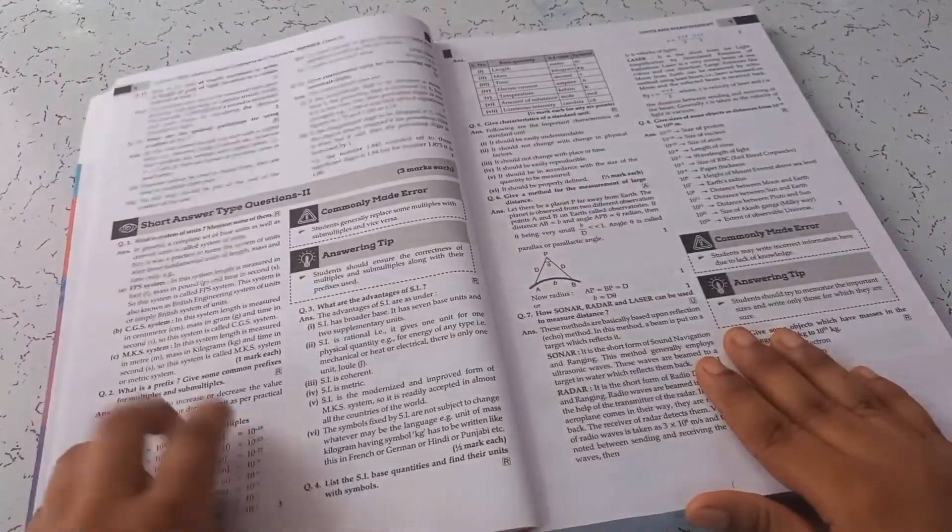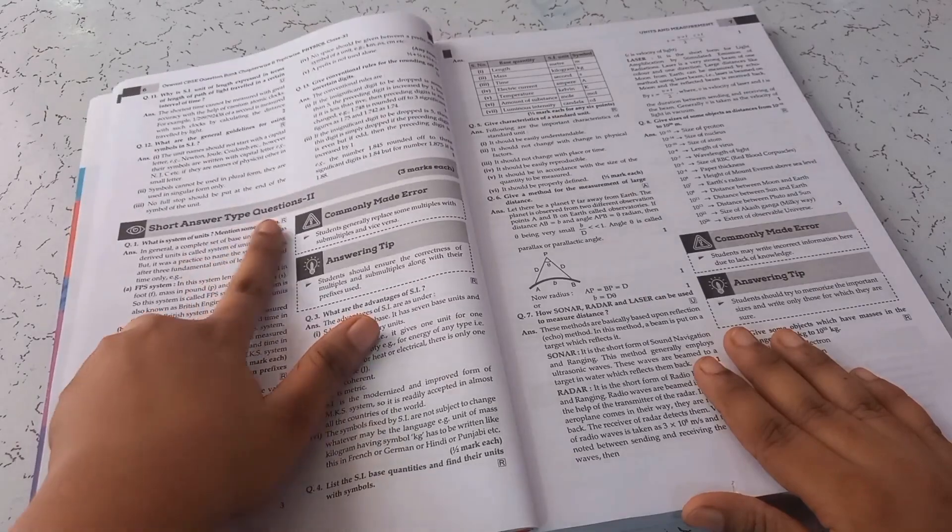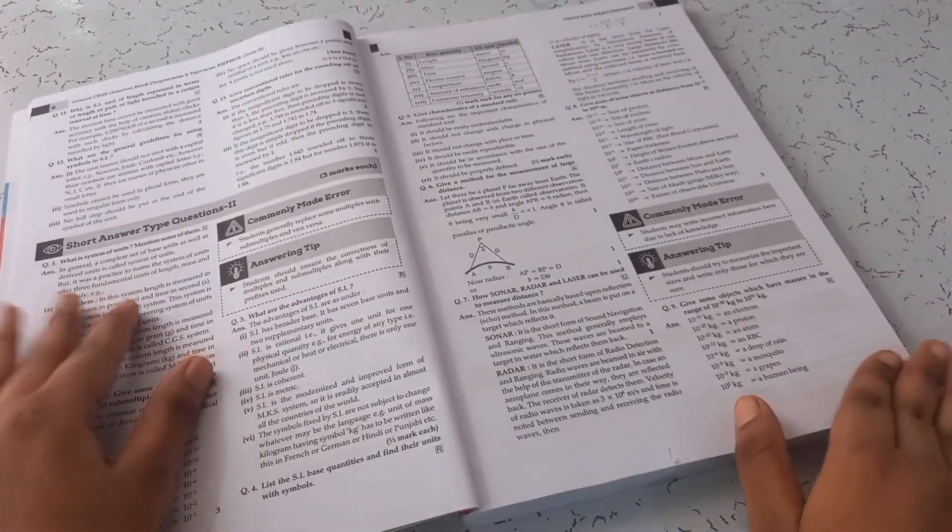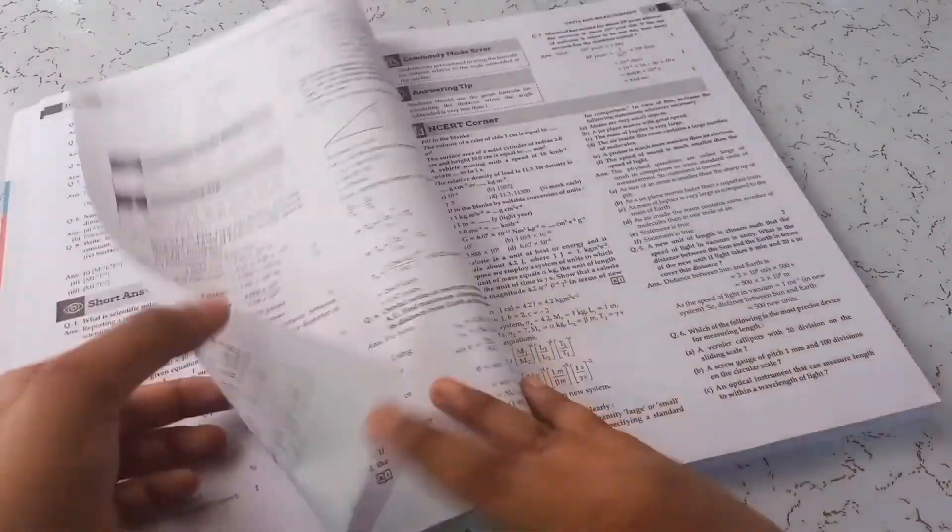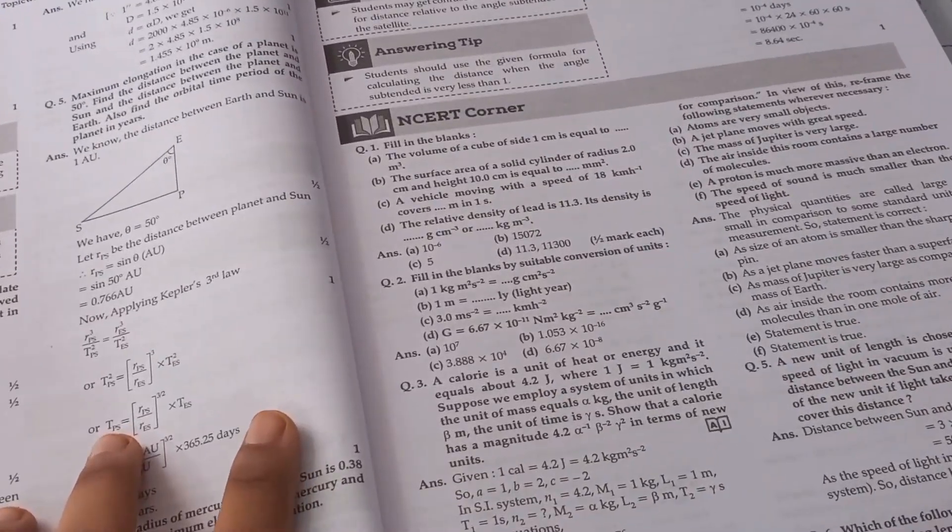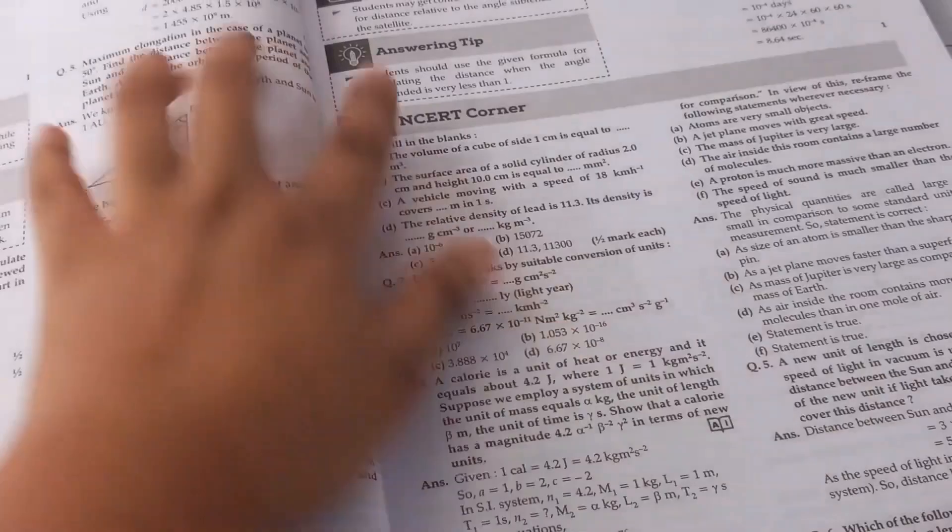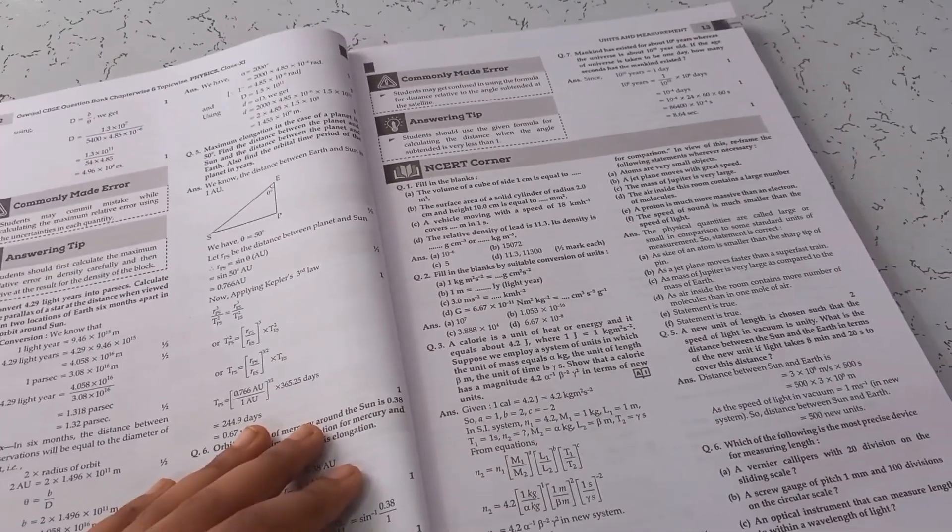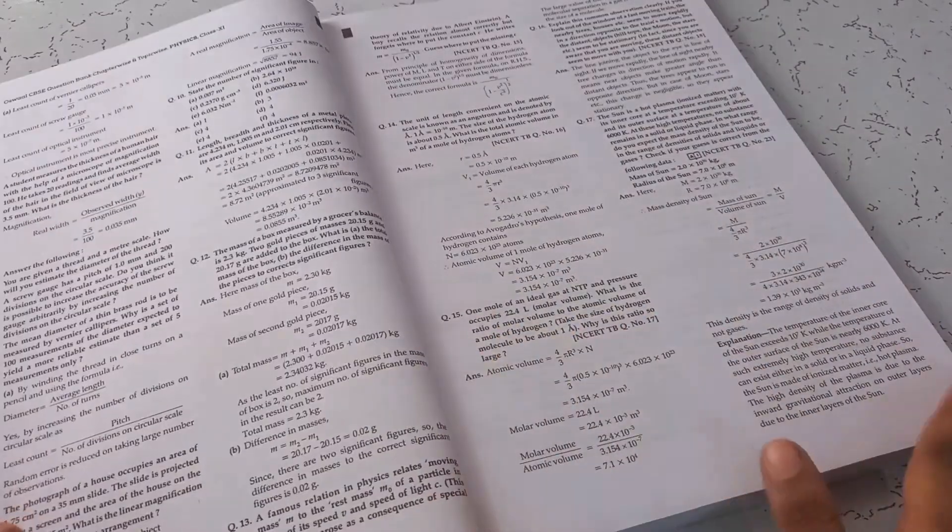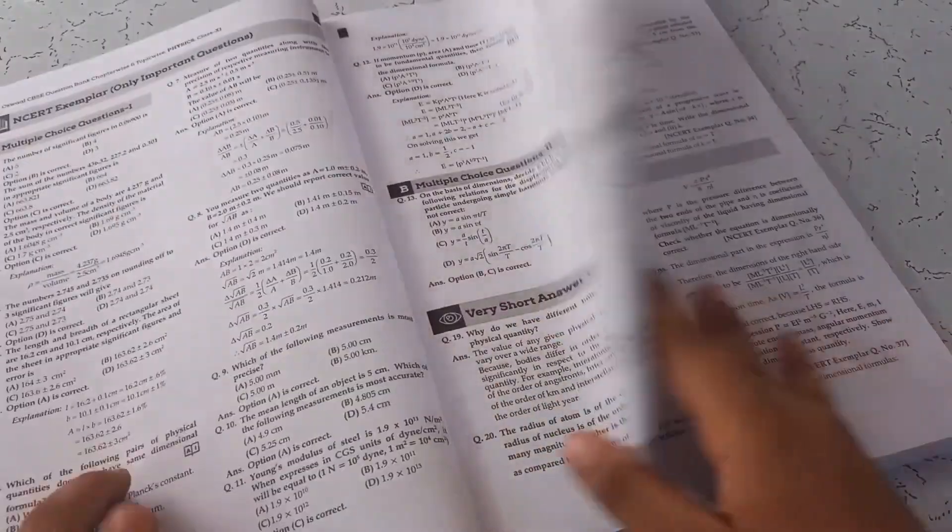It is provided with the categories of very short, short and short type second part, long answer type questions in each topic. And let's just not ignore the NCERT corner. It has this NCERT corner as well in which only important questions of NCERT is given. So that is the best part of this book.